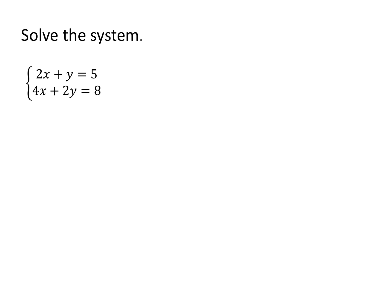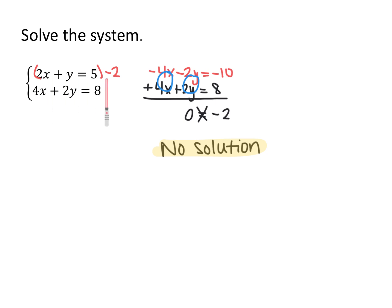Now we have the system 2x plus y equals 5 and 4x plus 2y equals 8. I chose to use elimination and multiplied the top equation by negative 2 to eliminate the y's, getting negative 4x minus 2y equals negative 10. Adding that to 4x plus 2y equals 8, both the x's and y's cancel, leaving 0 equals negative 2. Since 0 does not equal negative 2, this system has no solution — these are parallel lines, making it an inconsistent system.